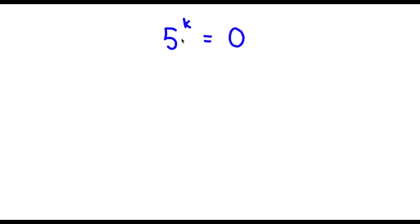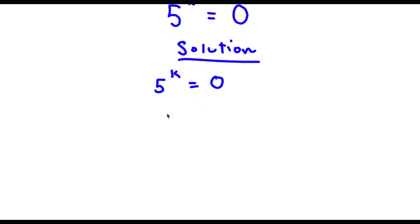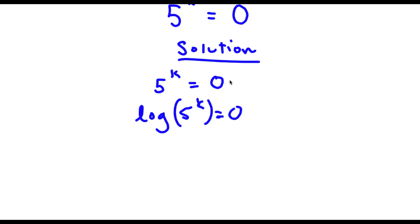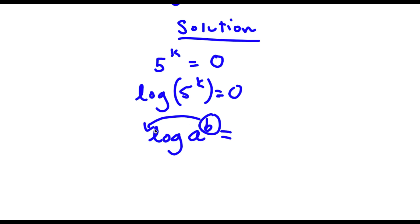Alright, so for the first bonus problem, 5 to the power of k is equal to 0. We start with 5 to the power of k is equal to 0, then I'm going to go ahead and take the log on both sides. So now I have log of 5 to the power of k is equal to log 0. Now an important property of logarithms is that if I have something in the form log a to the power of b, I can actually move this exponent b to the front of the logarithm, so this would be equal to b times log a.